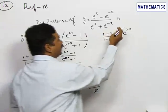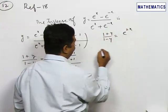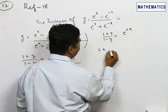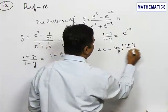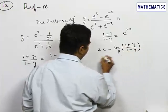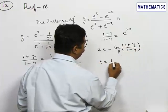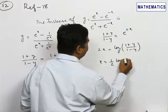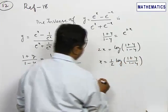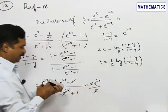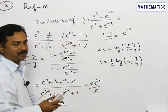Now, let us remove the exponential form by taking log on both sides. That is, 2x equals log of (1+y)/(1-y). From this, x equals 1/2 log of (1+y)/(1-y).